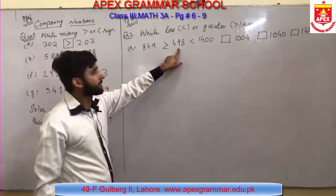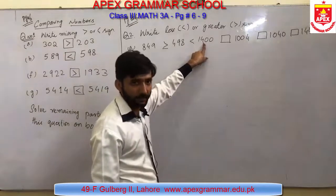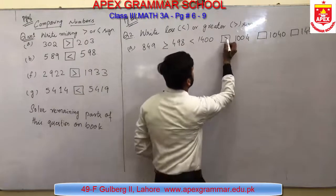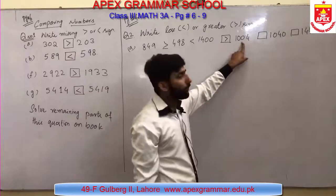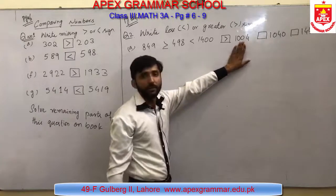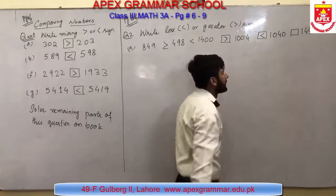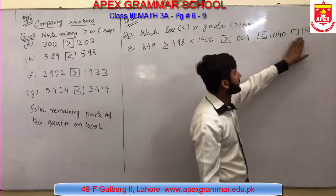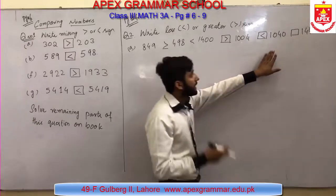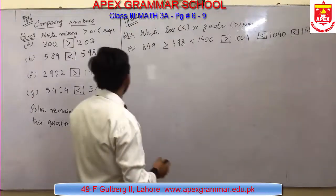Continuing part A: 1400 is greater than 1004. Next, 1004 is the first number and 1040 is the second — you have to choose your sign according to the first number, which is 1004, so 1004 is less than 1040. And the last: 1040 is less than 1440, since the first number is smaller and the second number is greater. This is part A of question number 2.